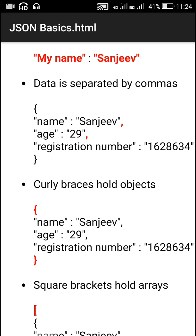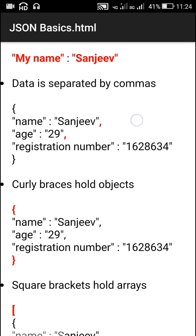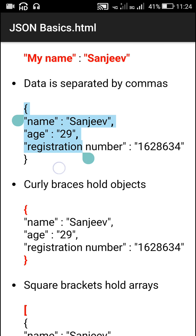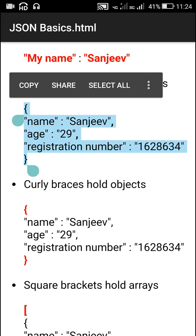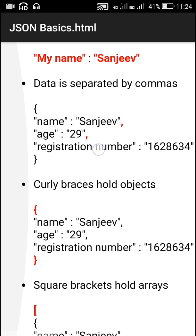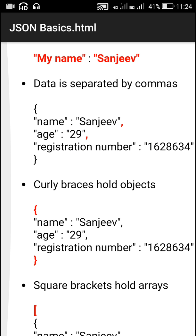In JSON, data is separated by commas. This is a JSON object and it contains three different data items with three different keys: name, age, and registration number. Name and age are separated by a comma, and age and registration number are also separated by a comma.